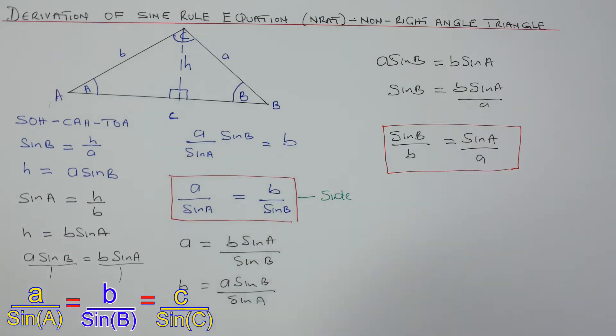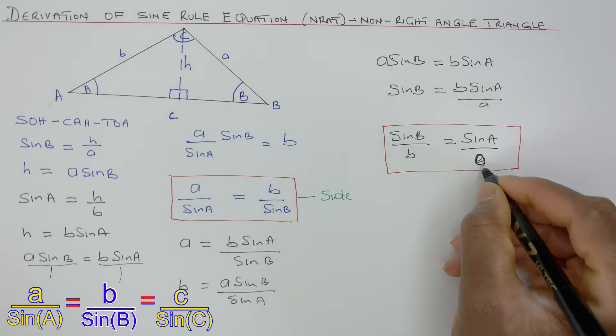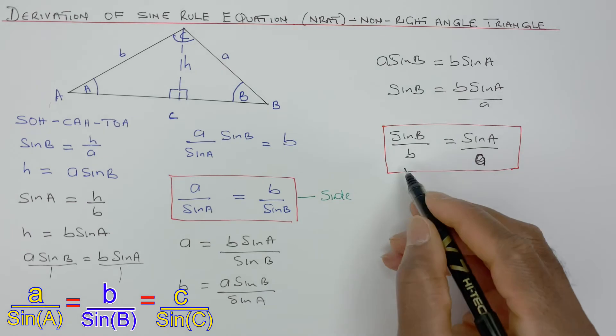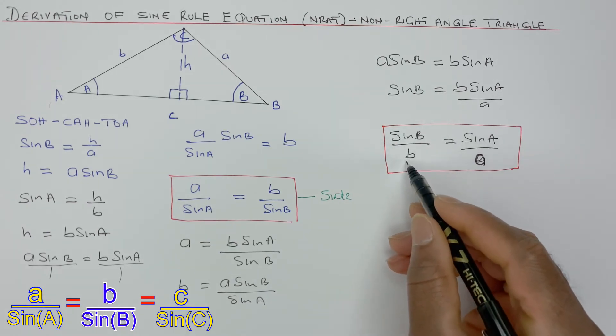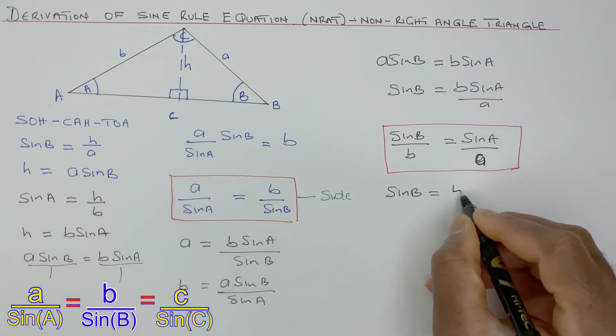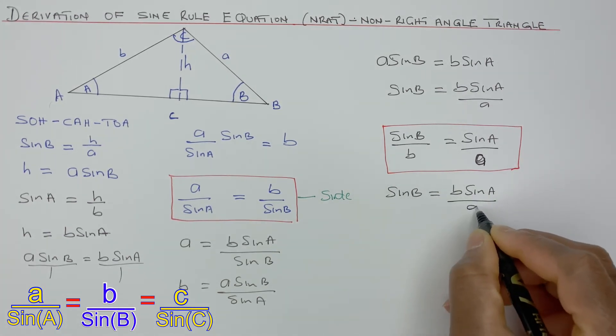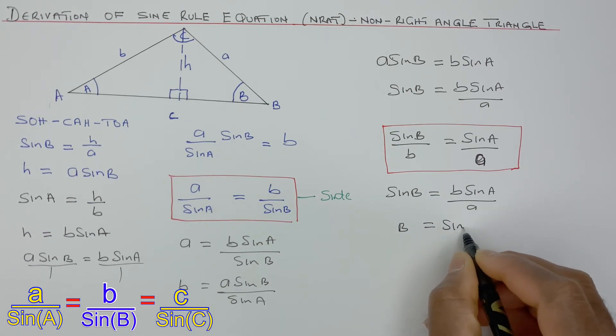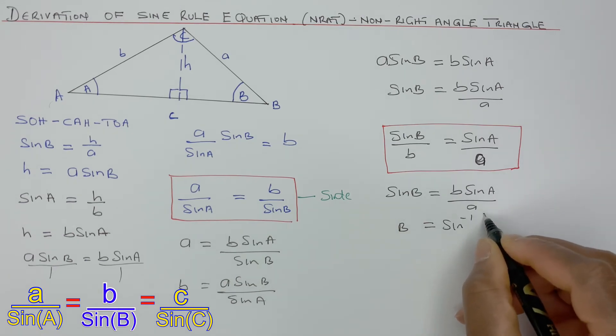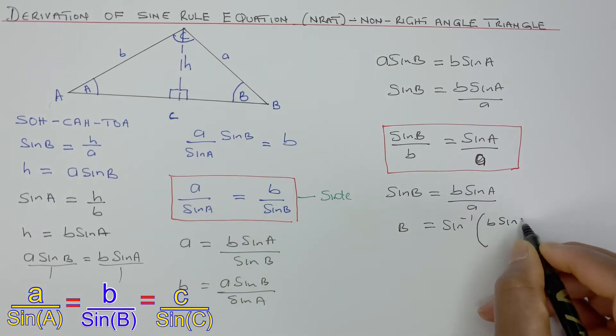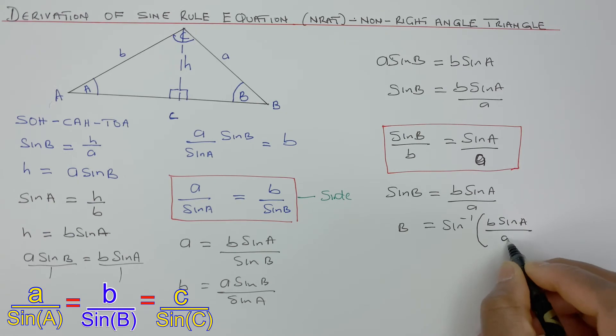In this situation, you can then make any of these the subject. So if you want to find B, angle B, you take B to the other side. So sine of B equals B sine of A over little A. Therefore, B will be sine inverse of sine, because you divide both sides by sine, and this is 1 over sine is sine to power minus 1. B sine of A over little A.